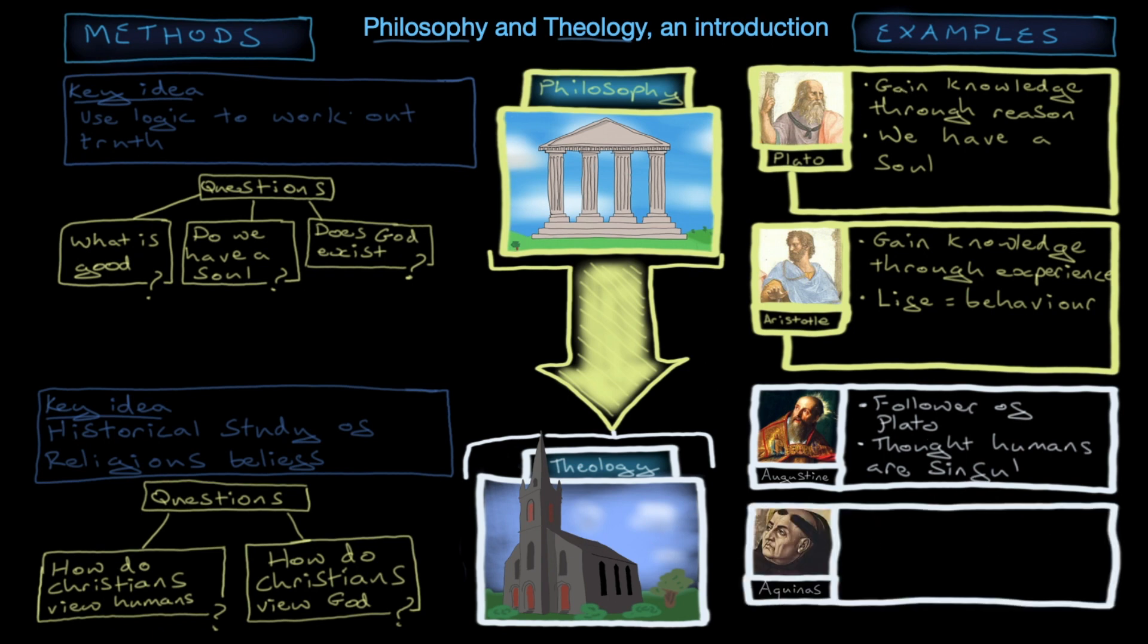Another example might be Aquinas, almost a thousand years later than Augustine, by the way, although the pictures don't indicate that. He was very much a follower of Aristotle. So you see that debate about the origin of knowledge kind of coming through here in two of the historically greatest theologians. One follows Plato and one follows Aristotle.